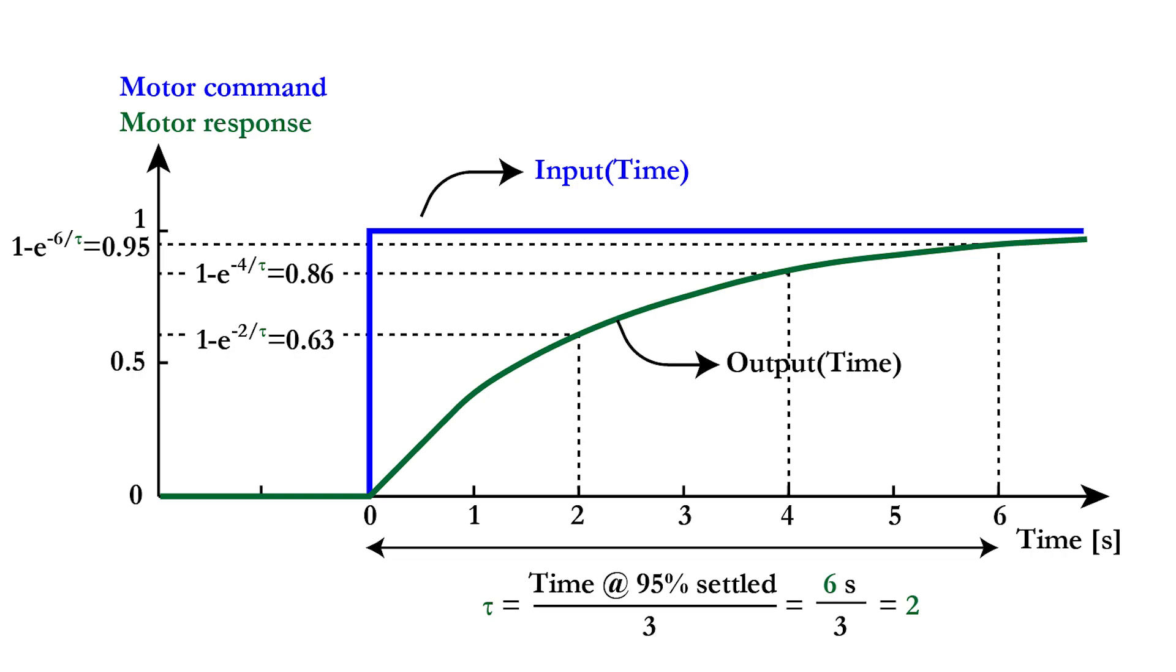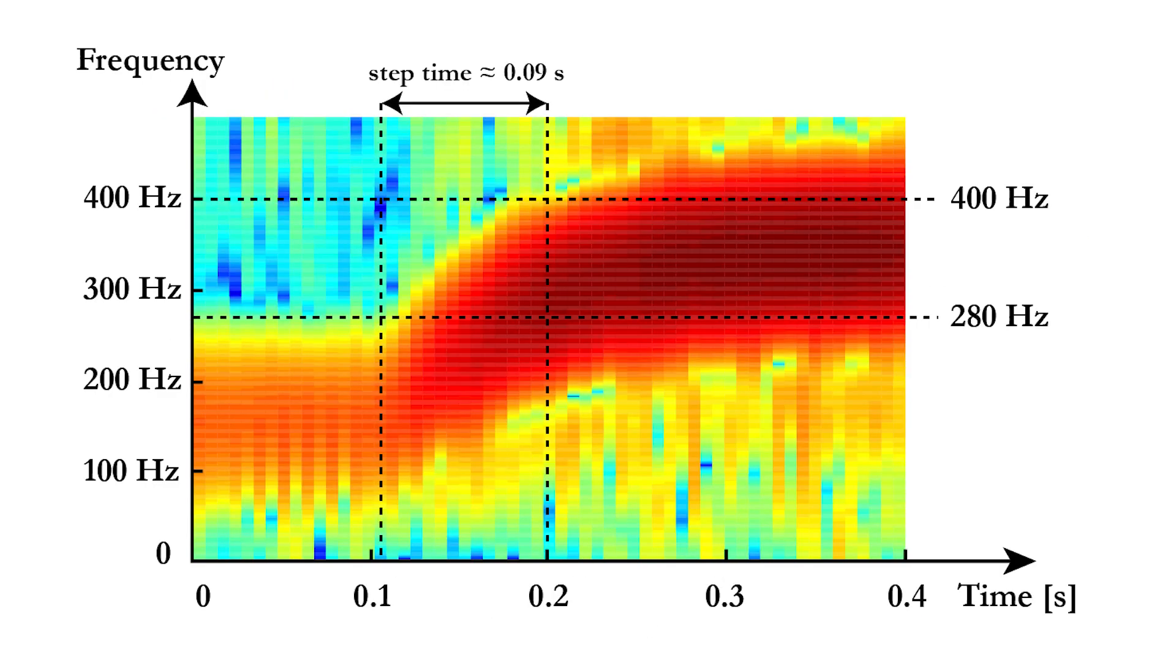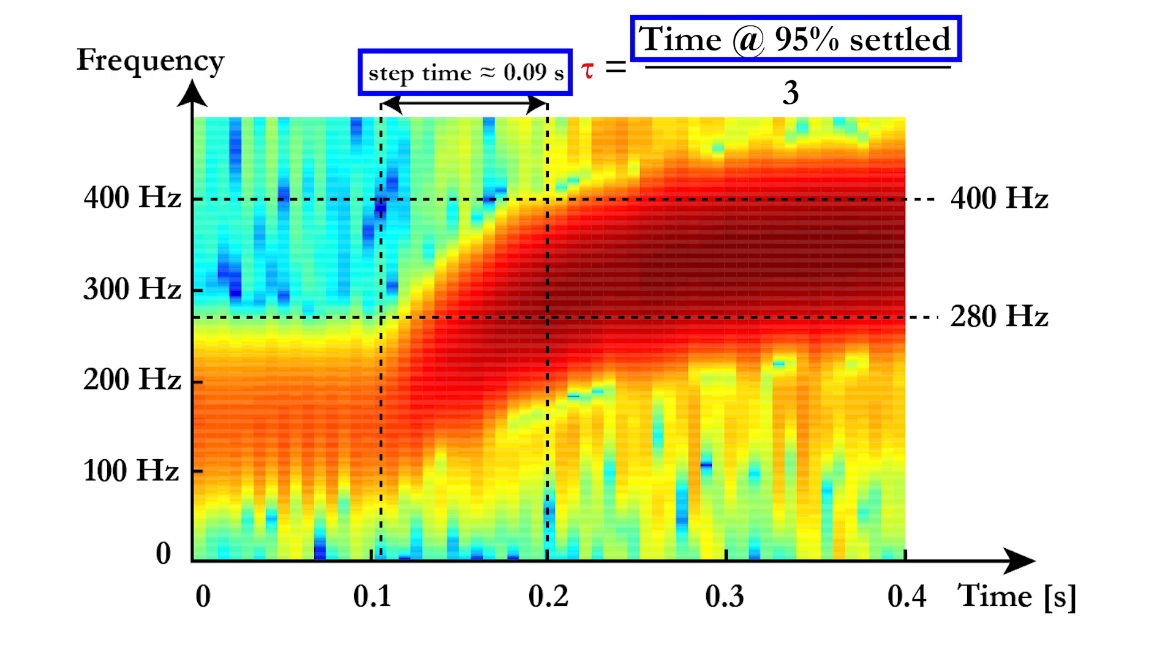If tau is higher, for example 2, the motor response will be twice as slow as shown on the graph in green. For our motor, this gives a time parameter tau that is equal to 90 ms divided by 3, or 0.03 seconds.